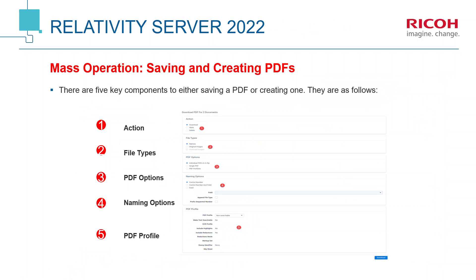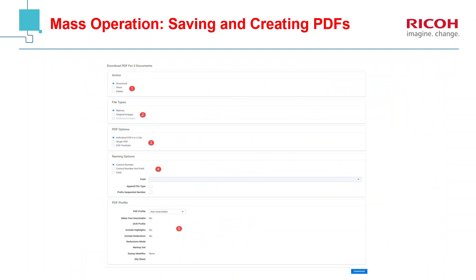There are five key components to either saving a PDF or creating one. They are as follows: Action, file types, PDF options, naming options, and then PDF profile. Let's take a deeper dive, but a brief one.